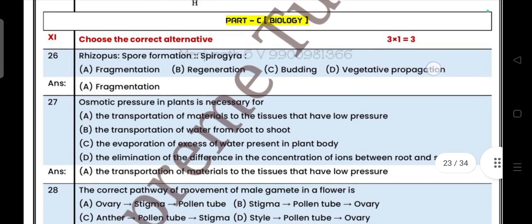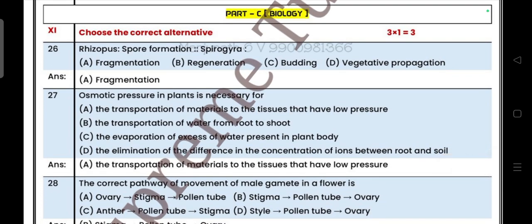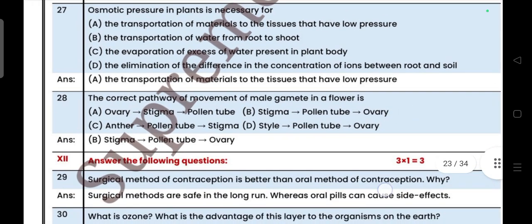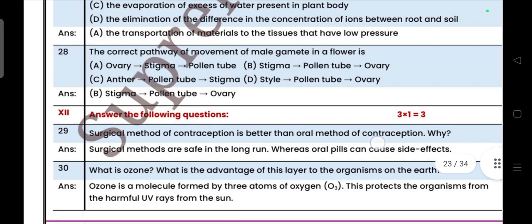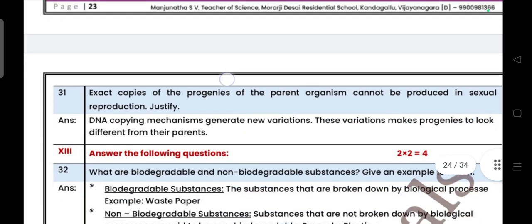Next, biology part 3, part C biology. Three multiple choice questions. Rhizopus, spore formation. Spirogyra, fragmentation. Osmotic pressure in plant is necessary for transportation of material to tissue to have low pressure. The correct pathway of movement of male gamete in flower is, answer is B, stigma, pollen tube, and ovary. Next, one mark questions. Surgical method of contraception is better than the oral method of contraception. Surgical methods are safe in the long run whereas oral pills can cause side effects. What is ozone? What is the advantage of this layer to the organisms on the earth? So write the answers. Exact copy of proteins of a parent organism cannot be produced in sexual reproduction, justify.